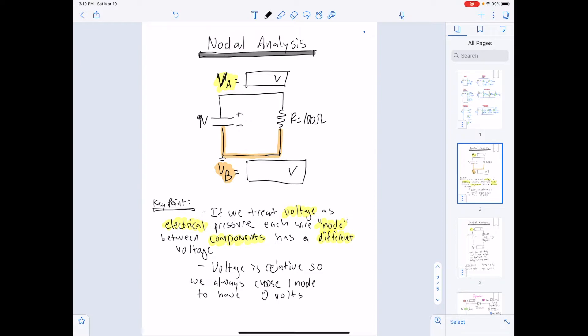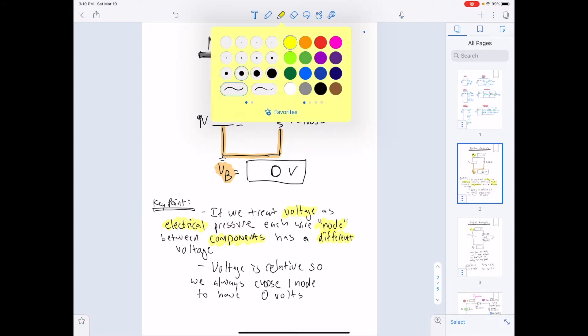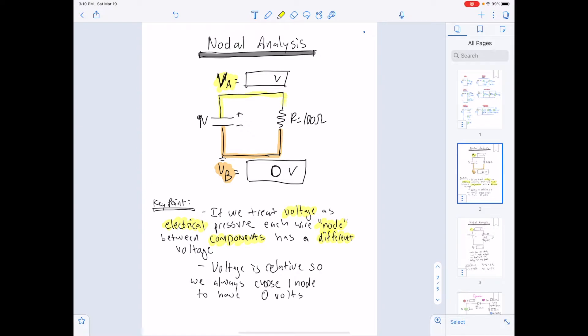Because voltage is relative, we choose one wire, one node, to act as our reference to be zero volts. So our convention is the negative terminal battery is zero volts of electric pressure. And same thing up here. If we attach a wire to a terminal of our battery, it should have the same voltage as that terminal battery. So this voltage at node A becomes nine volts. Why is it such a useful tool?